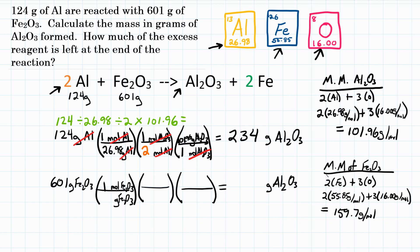159.7 goes on the bottom of the first conversion factor, and grams of Fe₂O₃ cancel. For the second step, we turn moles of Fe₂O₃ into moles of Al₂O₃ using mole ratios. The coefficient for Fe₂O₃ is an invisible 1, which is the same for Al₂O₃. Moles of Fe₂O₃ cancel. The last step is the same as above: 101.96 grams of Al₂O₃ on top and one mole on the bottom, since we're converting to the same product.